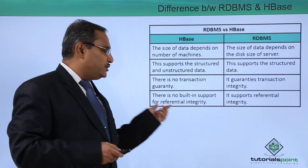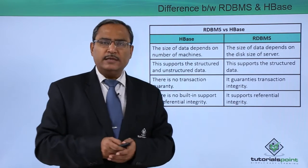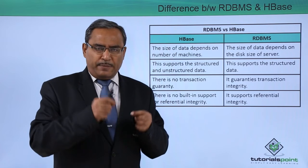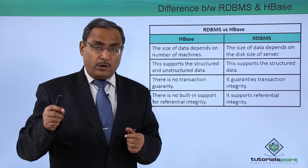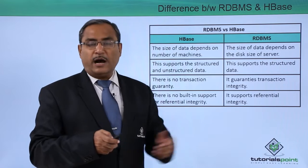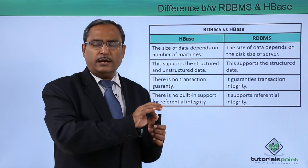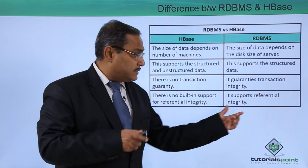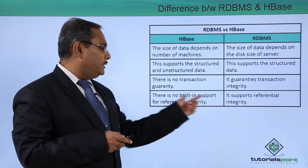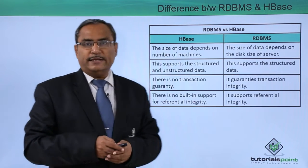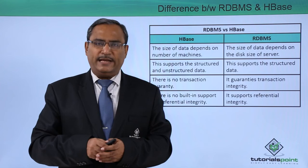There is no built-in support for referential integrity in HBase, whereas RDBMS supports referential integrity. Referential integrity means a foreign key — a prime attribute in one table, if it is a non-prime attribute in another table, is called a foreign key in that second table. In the foreign key column, we cannot put any value which does not belong to the primary key column of the other table. So RDBMS supports referential integrity, but there is no built-in support for it in HBase. In this way, we have discussed the differences between RDBMS and HBase.